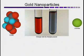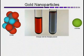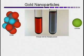Gold nanoparticles separated by large citrate ions look red, as shown on the left. Gold nanoparticles separated by small chloride ions look blue, as shown on the right. The difference between the two test tubes is that salt water has been added to the first, and the smaller chloride ions allow the gold nanoparticles to get closer together and change color.